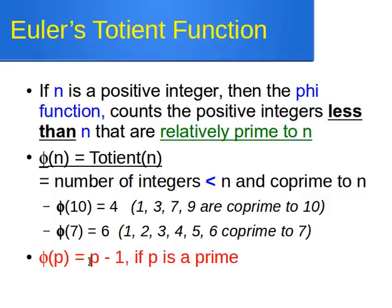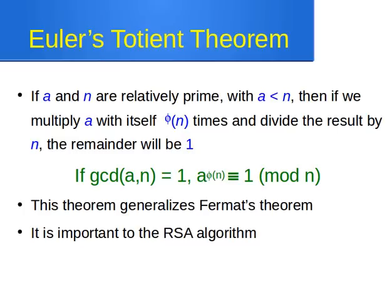For example, 7 is a prime number, so phi of 7 is 7 minus 1, which is 6. Similarly, 11 is prime, so phi of 11 is 10. Notice that we count from 1 upwards — we don't include 0 or negative numbers. Now let's move on to Euler's totient theorem.